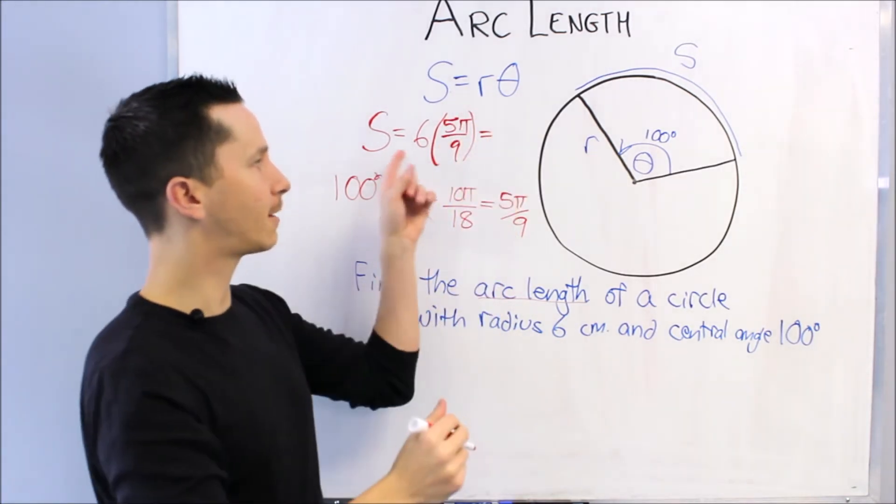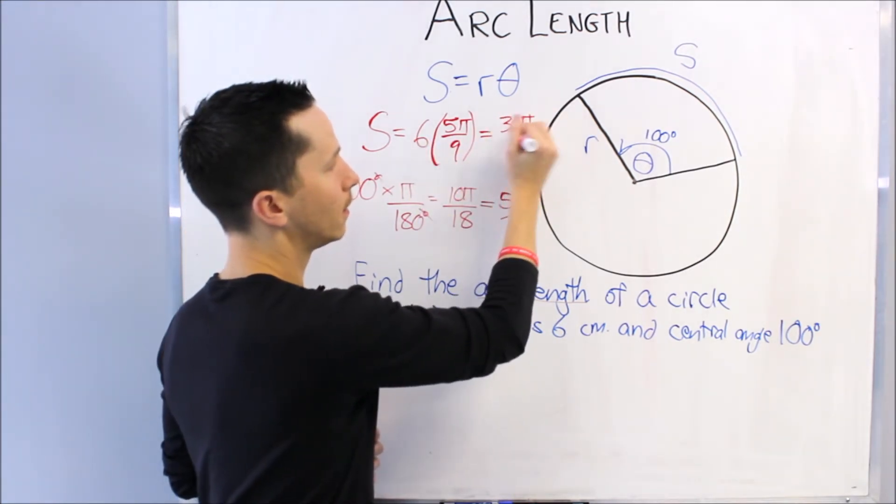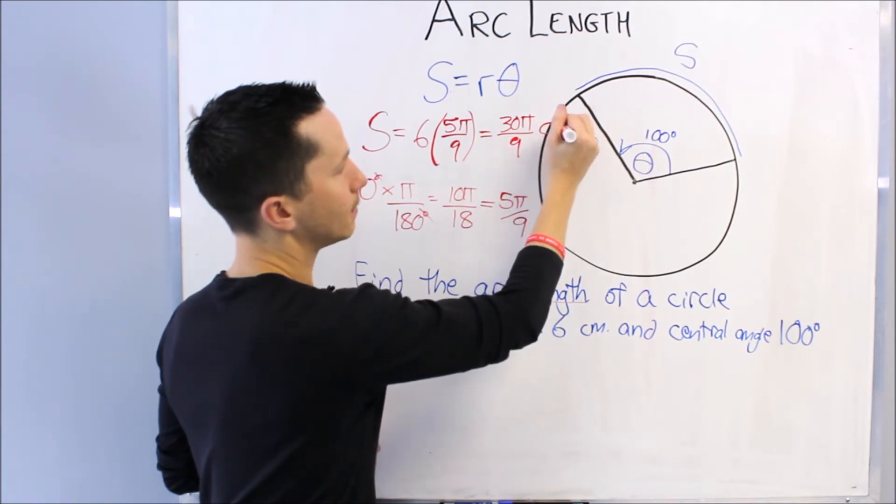30π over 9 centimeters, because it's measuring arc length. Make sure you get your units in there as centimeters.